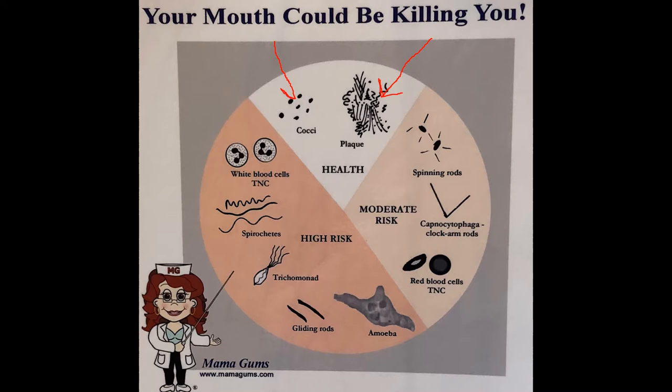We'll often see a lot of dot-shaped cocci bacteria. Typically, there's going to be some white blood cells that are round, and you can see the little granules moving around inside of the cells, which is kind of neat.